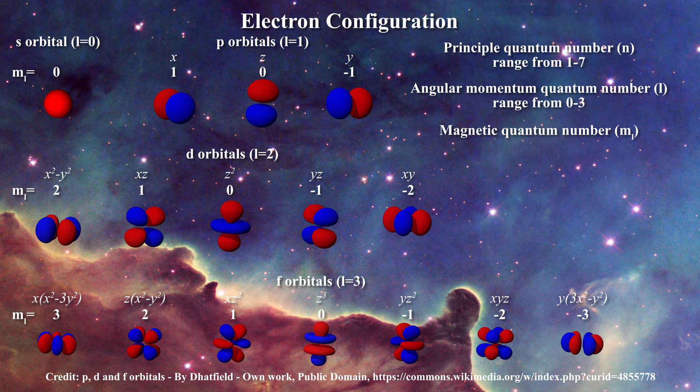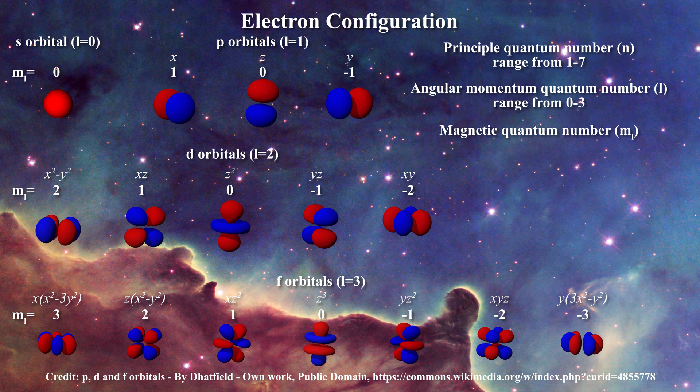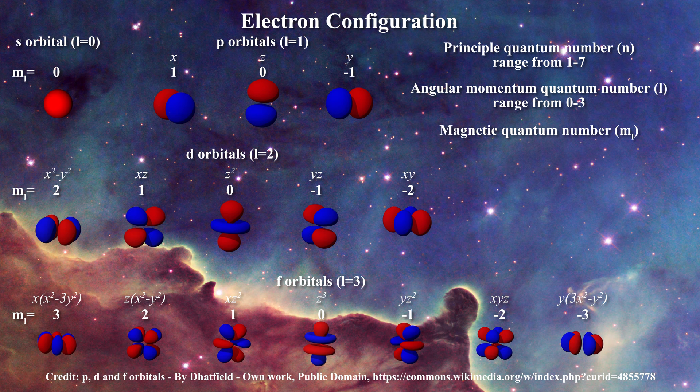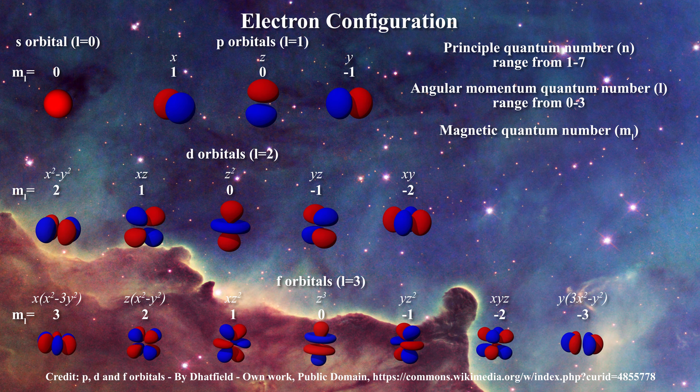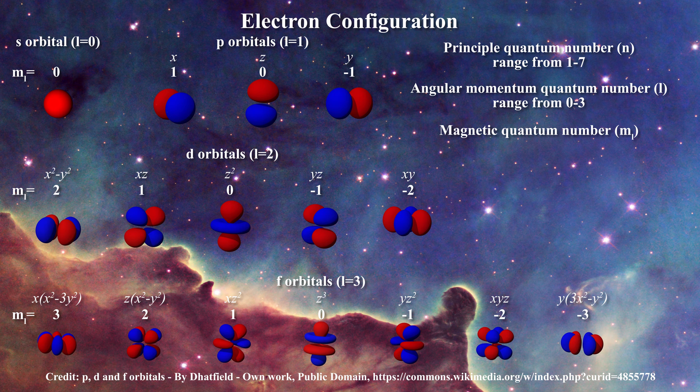There are five d orbitals and seven f orbitals, which differ both in the shape of their probability functions and their geometry. These orbitals have specific geometric alignments and are characterized by magnetic quantum numbers two, one, zero, minus one and minus two for the d orbitals, and three, two, one, zero, minus one, minus two and minus three for the f orbitals. The magnetic quantum numbers m sub l are utilized in describing which exact orbitals are filled.